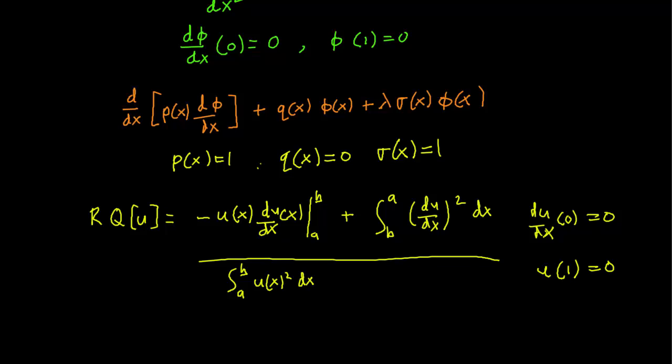Of course, the a and b are 0 and 1. But notice this first term over here on the numerator. When you plug in x=1, the u(x) disappears. When you plug in x=0, the second term disappears. So this actually just goes away and makes our equation a lot simpler to handle.